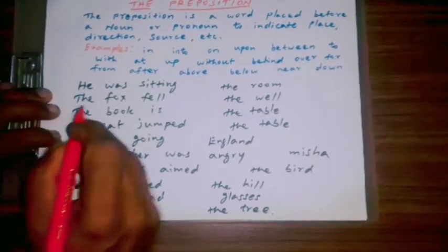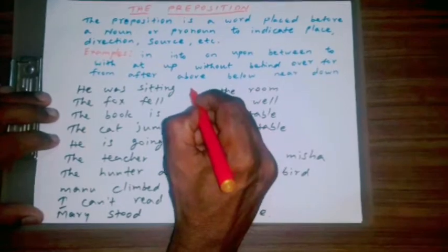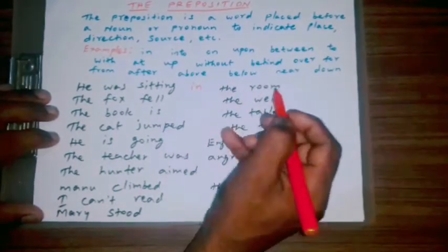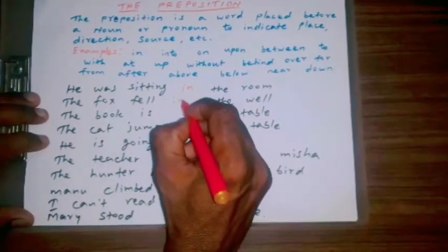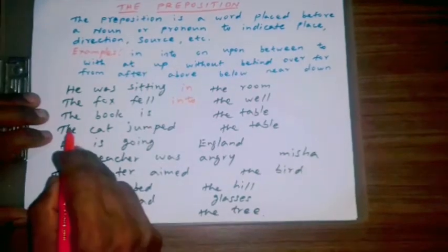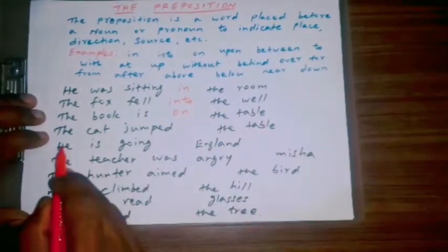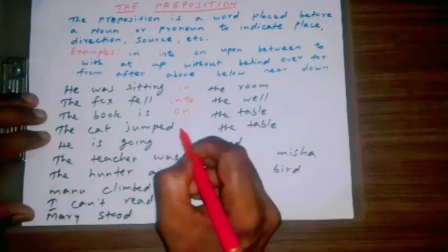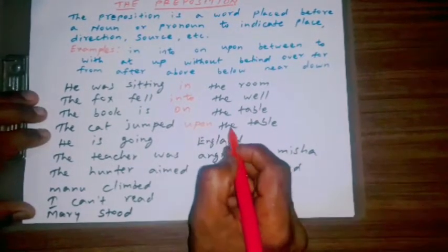He was sitting in the room. The fox fell into the well. The book is on the table. The cat jumped upon the table.